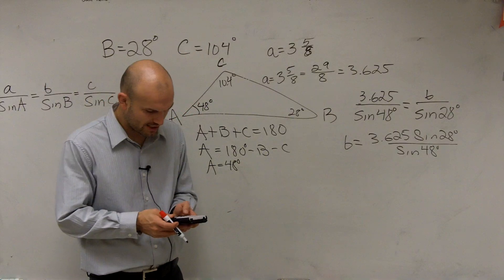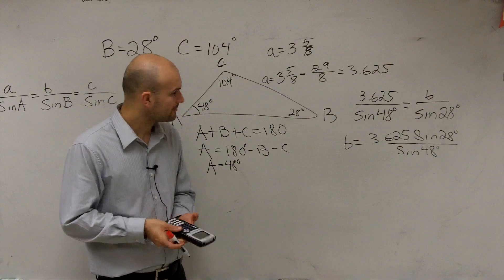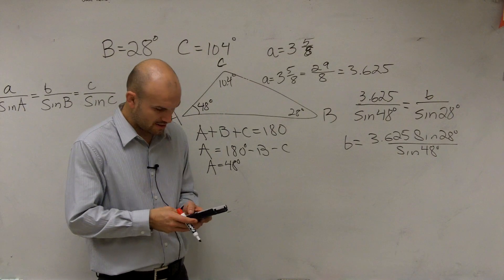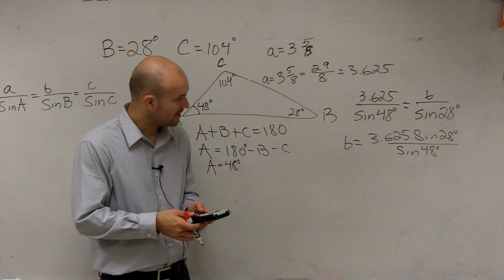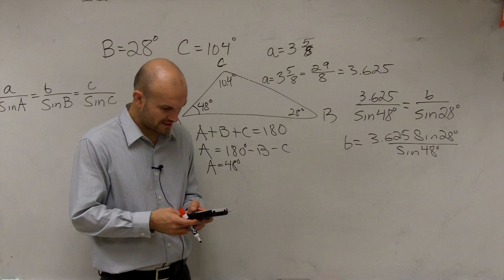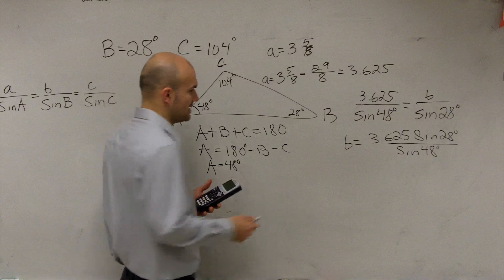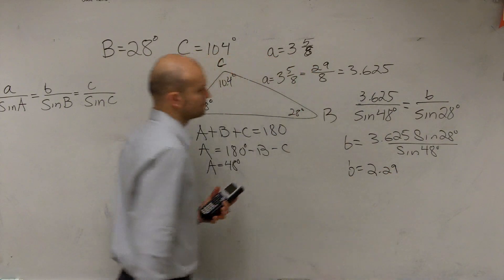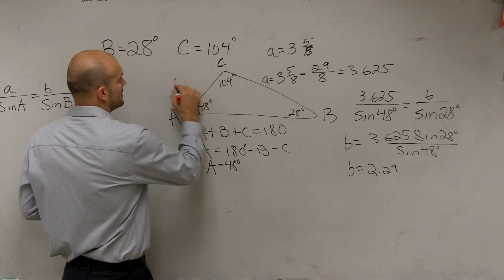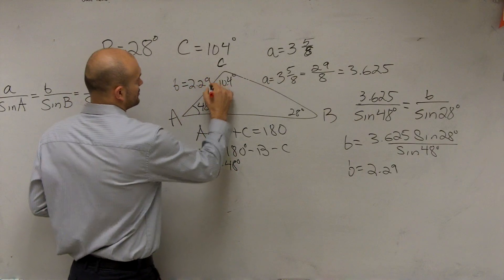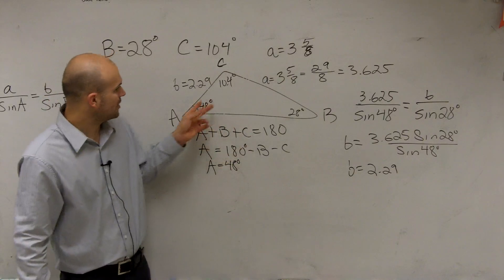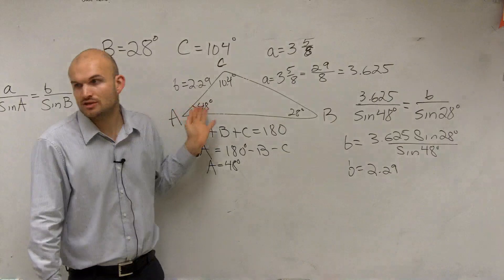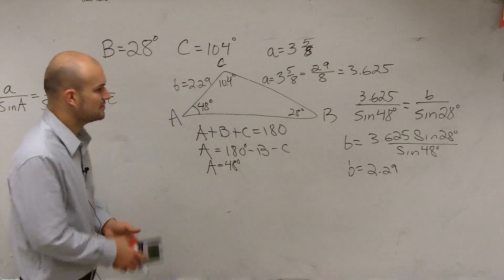Now we just work in our calculators — make sure we're in degree mode. We'll do 3.625 times sine of 28, then divide by sine of 48, and we get 2.29. So B equals 2.29. That makes sense: at 48 degrees my opposite side was 3.625, and at a smaller angle of 28 degrees I have a smaller side length of 2.29.